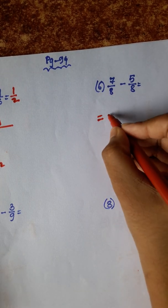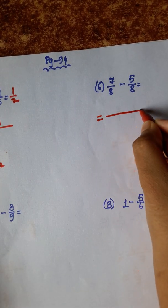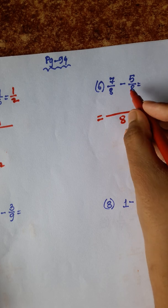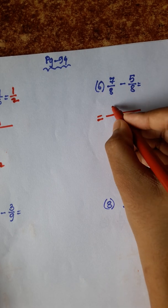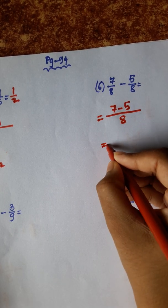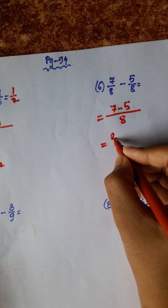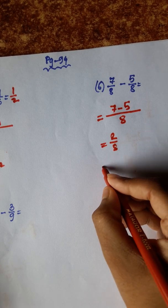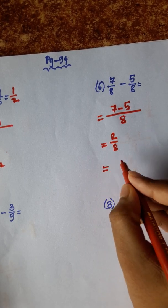Number 6: denominator 8. Numerator 7 minus 5 is 2, so answer is 2 by 8.